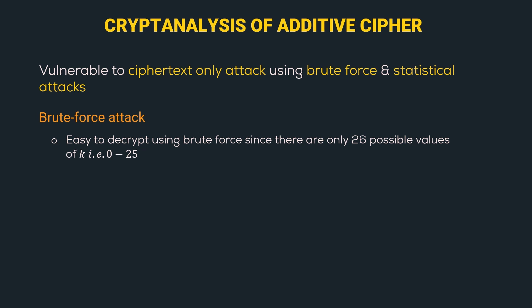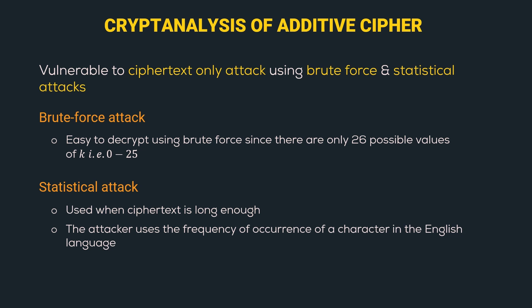The next attack is a statistical attack, which is used when the ciphertext is long enough. Here the attacker uses the frequency of occurrence of characters in the English language. Since the plain text language is English, we know that the letter E is the most frequently used alphabet. So the attacker calculates the frequency of every letter in the ciphertext and assigns the letter E to the most frequently appearing letter. Since one mapping of ciphertext to plain text is known, he applies the same mapping to other alphabets and eventually gets the plain text. That's why additive cipher is the simplest and most vulnerable encrypting technique.